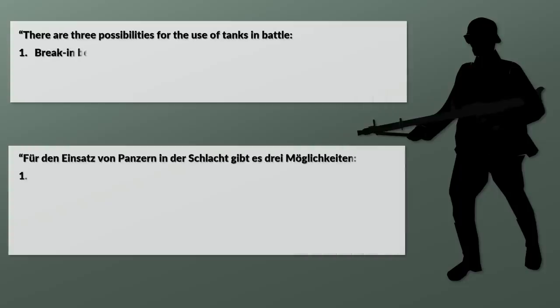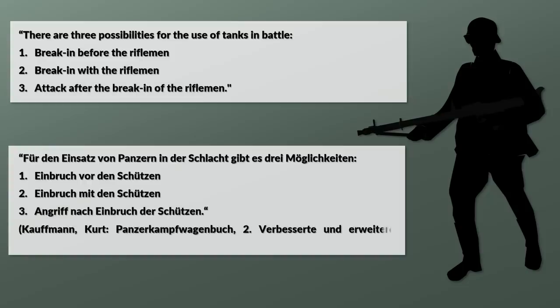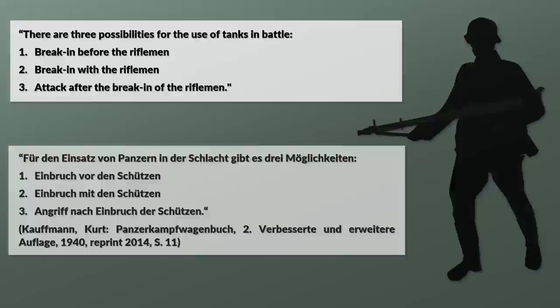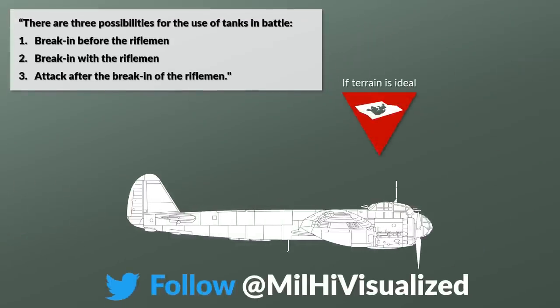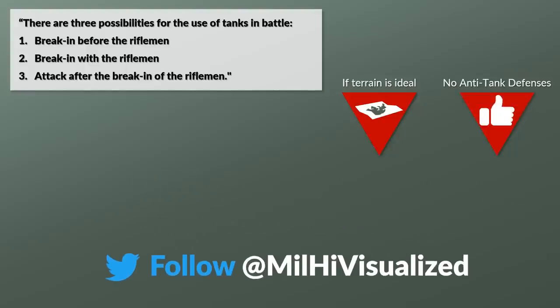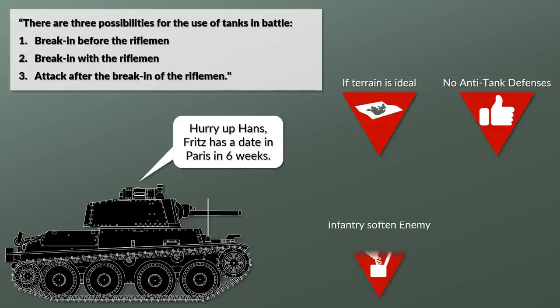Infantry was still a key element in warfare, and one key consideration was in which way the Panzer attack was conducted in relationship to the infantry. There are three possibilities for use of tanks in battle: first, break-in before the rifleman; second, break-in with the rifleman; third, attack after the break-in of the rifleman. The first two variants are only possible if the terrain is ideal for a Panzer attack and the enemy did not prepare proper anti-tank defenses like anti-tank ditches, obstacles, or minefields. The third option has the downside of limiting combined arms use and requires the tanks to wait, yet since the infantry attack will stir up the enemy, the follow-up attack from the Panzers will have a stronger impact.